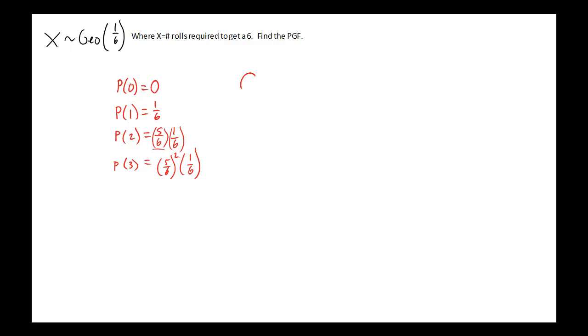So if I write out my G of T, then I see P0 plus P1T plus P2T squared plus P3T cubed, and so on and so forth. So P0 is 0, so I can leave that off. P1 is one-sixth, so one-sixth T, plus P2, which is five-sixths times one-sixth T squared, plus five-sixths squared times one-sixth T cubed, and so on and so forth.